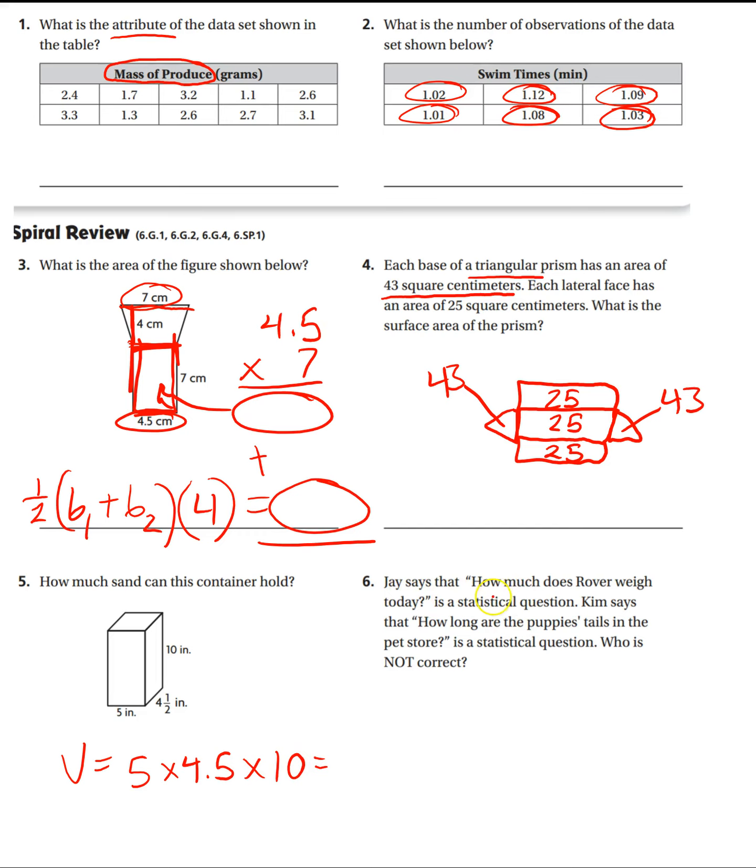Jay says that 'How much does Rover weigh today' is a statistical question. Kim says that 'How long are the puppy's tails in the pet store' is a statistical question. Who is not correct? So who is wrong? Well, Rover weighing today, that's just going to have one data set, one piece of information.